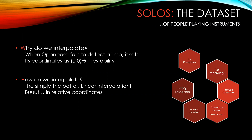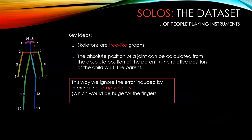But we use a trick. We interpolate in relative coordinates, and here is why. Skeletons are tree-like graphs. This means that each node in the graph has a single parent, and that the whole graph emerges from a single node. The absolute position of a joint can be calculated from the absolute position of the parent plus the relative position of the child with respect to the parent. This way we can ignore the error induced by inferring the drag velocity.